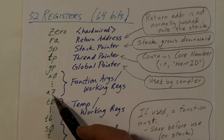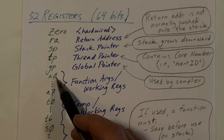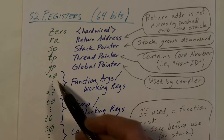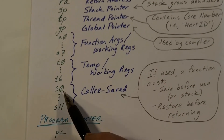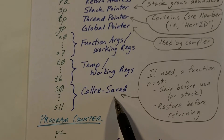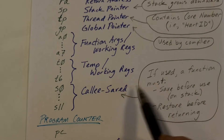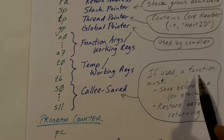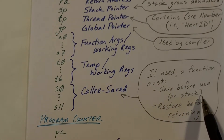Then we have the A registers, which are used to pass arguments to functions. A0 is used for a return value if the function returns something. The A registers and the T registers can be used freely within a function. In addition, we have 12 so-called callee-saved registers. The caller will assume that any function it calls will not modify these, so if a function wants to use any of them, it must save them first — typically pushed onto the stack — and restore them before returning.